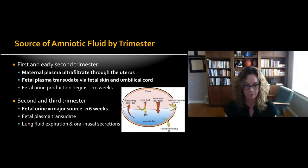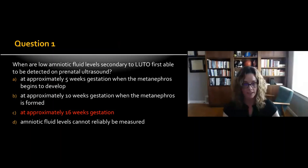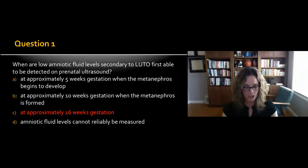The correct answer is approximately 16 weeks gestation, and the majority of us answered that question correctly. Low amniotic fluid levels secondary to LUTO can be appreciated starting around 16 weeks gestation when urine becomes the major source of amniotic fluid. Urine production does begin around 10 weeks once the metanephros is formed, but amniotic fluid is still a combination of maternal plasma and fetal plasma transudate prior to that.